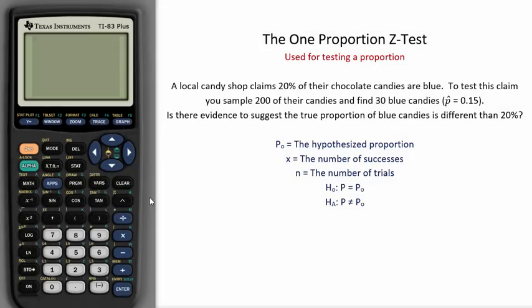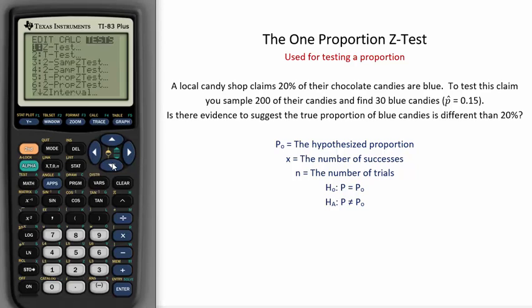The one proportion Z-test is used for testing a proportion. You can find this on the TI calculator under stat, tests, and then one proportion Z-test. We will need to enter in the summary statistics. A local candy shop claims 20% of their chocolate candies are blue.